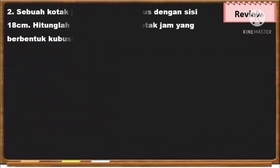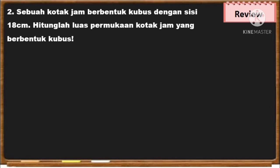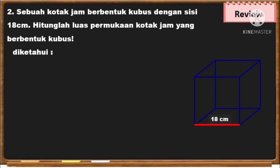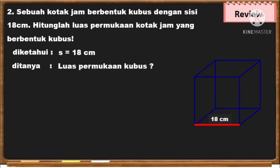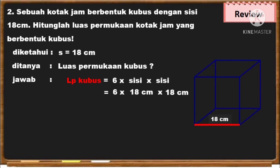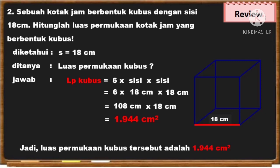Lanjut yang kedua ya. Sebuah kotak jam berbentuk kubus dengan sisi 18 cm. Hitunglah luas permukaan kotak jam yang berbentuk kubus itu. Diketahui sisinya adalah 18 cm. Ditanya luas permukaan kubusnya. Jawab: luas permukaan kubus = 6 × sisi × sisi. Kita masukkan ke dalam rumus: 6 × 18 cm × 18 cm = 108 cm × 18 cm. Hasilnya adalah 1.944 cm persegi. Jadi, luas permukaan kubus tersebut adalah 1.944 cm persegi.